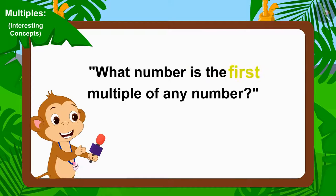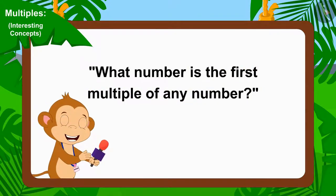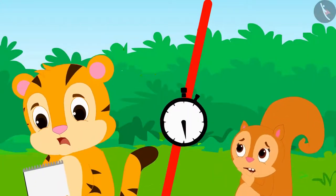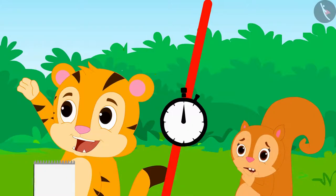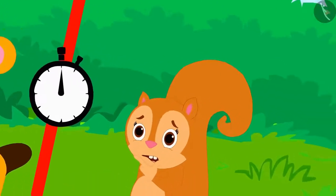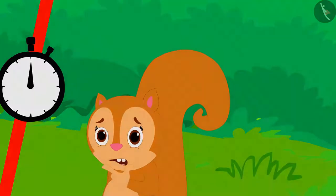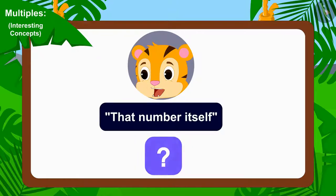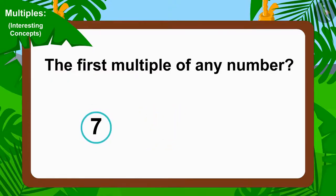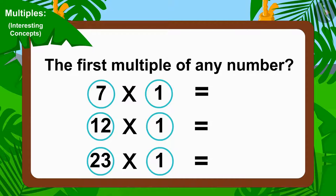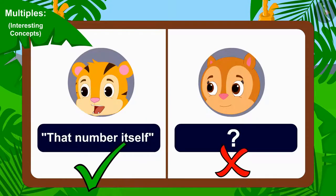The question was: what number is the first multiple of any number? Time started ticking and Chanda and Shir Khan started thinking. When time was up, Shir Khan answered 'that number itself,' while Chanda could not think of an answer. To find the first multiple of any number, we multiply it by one, and any number multiplied by one equals the number itself. So Shir Khan's answer is absolutely correct.